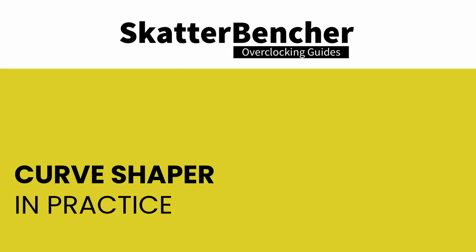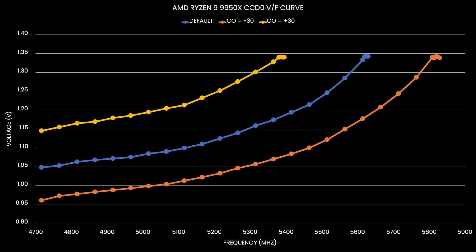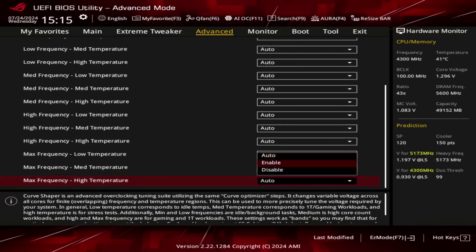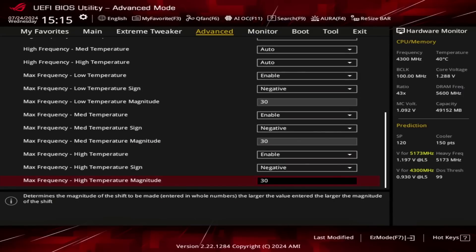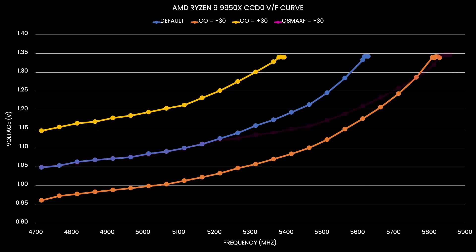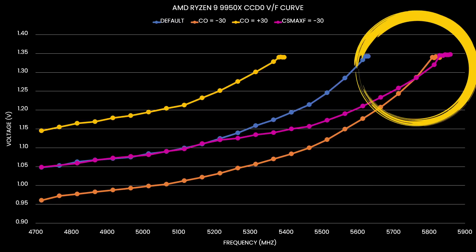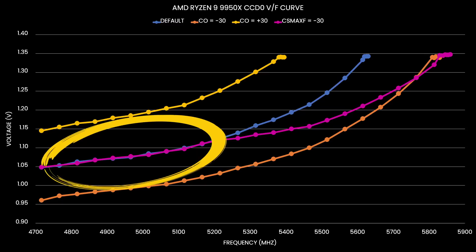Let us first set up the drawing board. We begin with three voltage-frequency curves of CCD0 of this Ryzen 9 9950X: the default curve, the plus 30 Curve Optimized, and the minus 30 Curve Optimized curve. That gives us a nice graph with essentially two guard bands around the default VF curve. Now let's go into the BIOS and set a minus 30 Curve Shaper for all temperature points at max frequency and see what happens. The voltage-frequency curve is adjusted, but only at the very upper end of the curve near the maximum frequency. The voltage for frequencies below 5.2 GHz is unaffected.